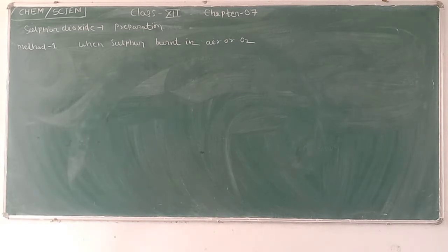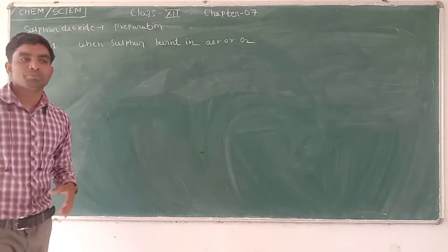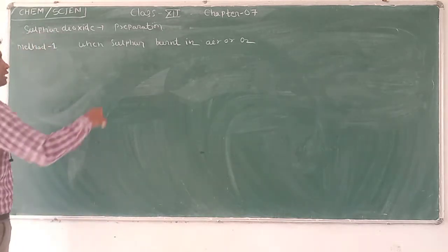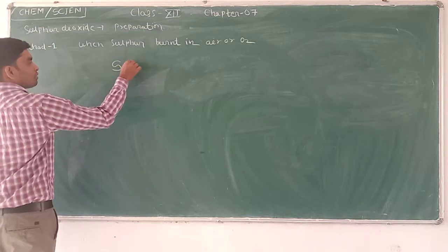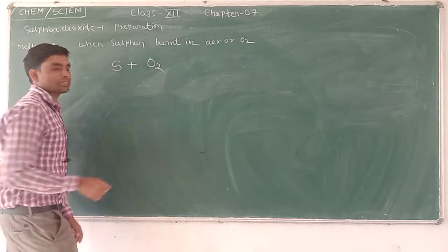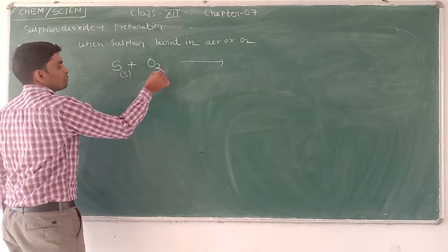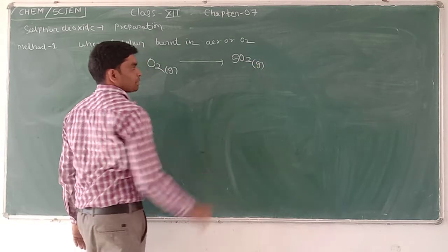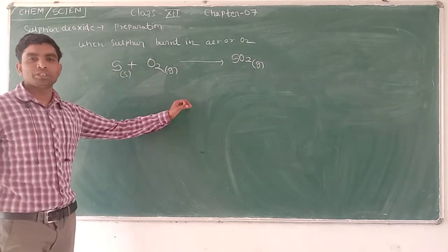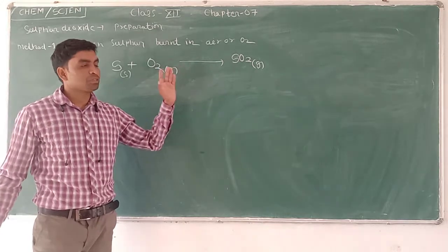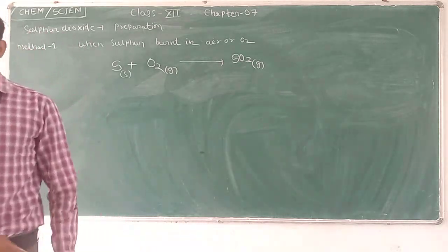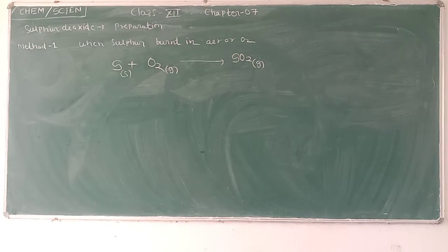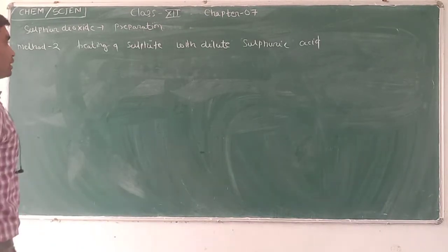Next, compounds of Sulphur. First one is Sulphur dioxide. Preparation method: It is prepared by burning sulphur in the presence of air or oxygen. S plus O2 gives SO2.